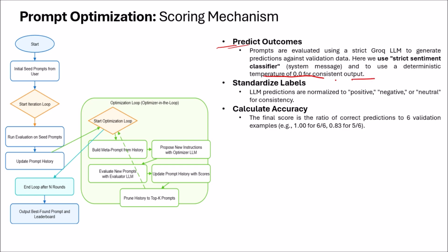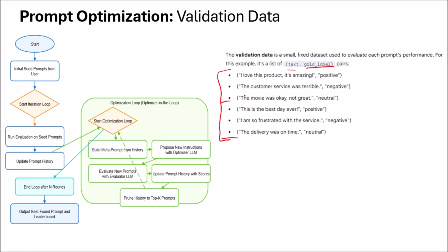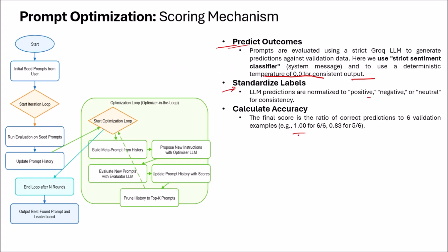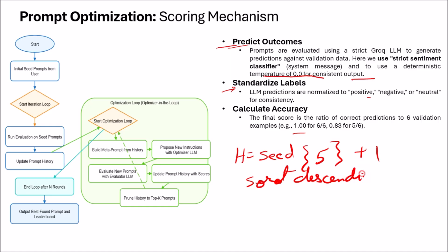This gives us the actual evaluation of each prompt. We use standardized labels — positive, negative, neutral — and calculate accuracy. For example, if we have 6 examples and prompt P1 gives correct results on all 6, the score is 6/6. After scoring, we update the prompt history — which initially contains 5 prompts — add the new one, sort it in descending order, and then enter the optimization loop, which runs multiple times.